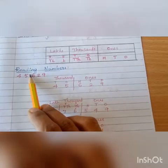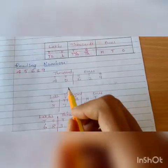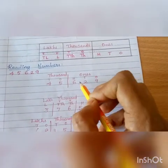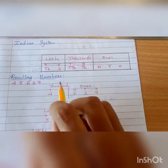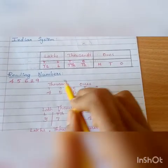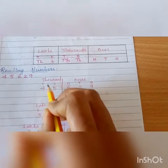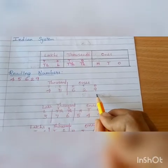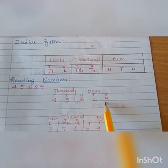Let me take the number 4, 5, 6, 2, 9. I have written the number with its place values above: ones, tens, hundreds, thousands, ten thousands. The period of ones and the period of thousands. Now reading the number: forty-five thousand, six hundred twenty-nine. Once more: forty-five thousand, six hundred twenty-nine.